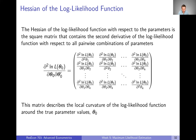Going all the way down the first column gets us to the cross-derivative with respect to both the first and the final (kth) parameter. This matrix is going to be k-by-k, where k is the number of parameters, and it's symmetric. Going down the diagonal gives the second derivative with respect to each individual parameter, while the off-diagonals give the second derivatives with respect to all pairwise combinations.